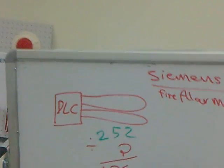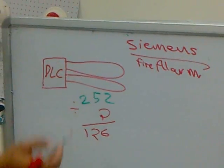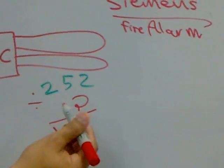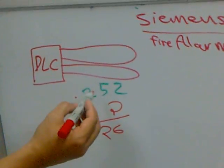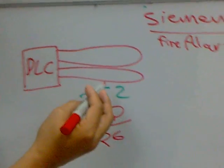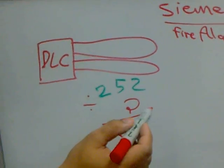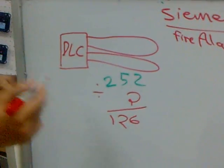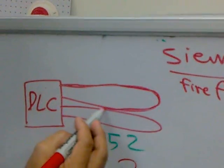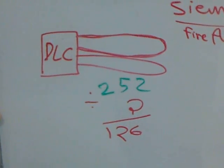Each loop's maximum is 126 devices — you can do 100 and 150, or just 100 per loop, but the maximum per loop is 126. We don't need to worry about current compatibility because the limitation is on device count only. However, if it's more than 126, we have to calculate the current. Also, the cable length should be a maximum of one kilometer.